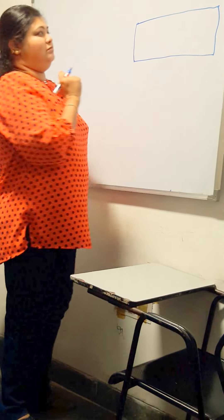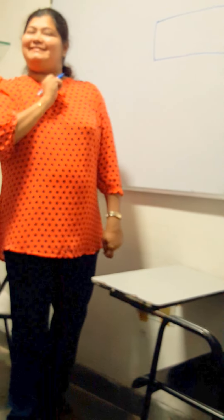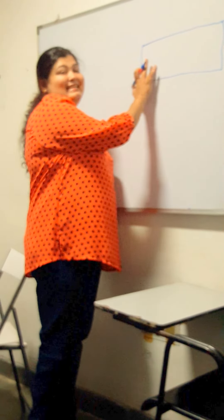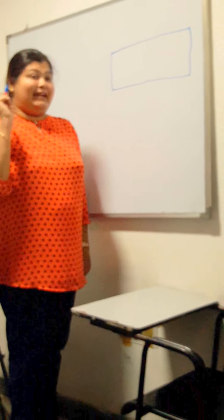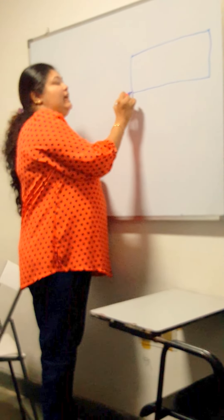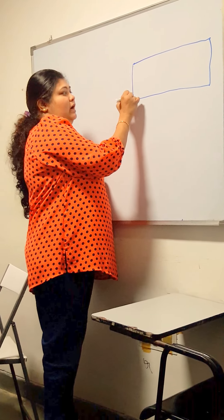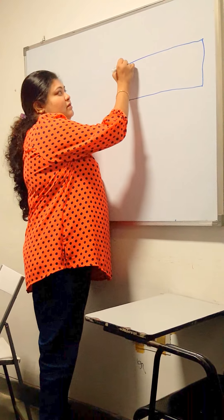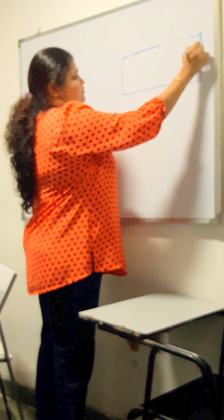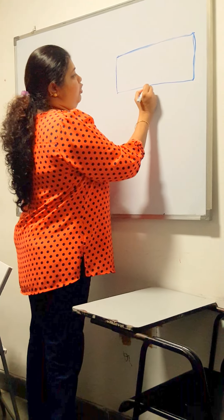Square. No, triangle. No, this is a rectangle. A rectangle has four sides — one, two, three and four.